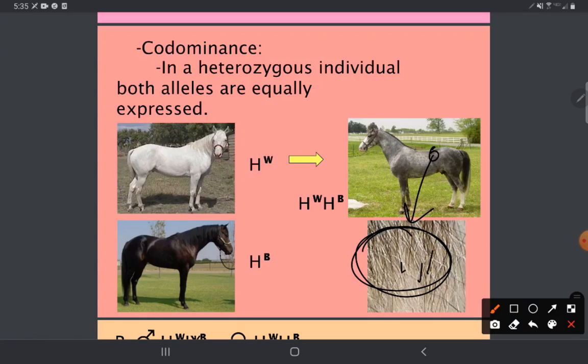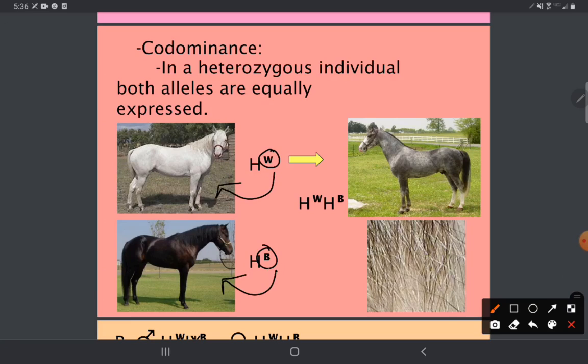You have hair that is white and hair that is brown. There is not a mix like in incomplete dominance. Instead, there is just both. To represent the allele or version of this gene, we use a superscript instead of capitalizing or lowercase. For the white, we use W, and for the brown, we use B.